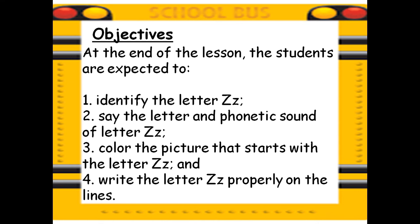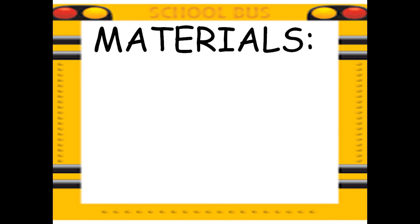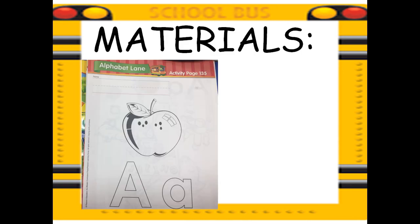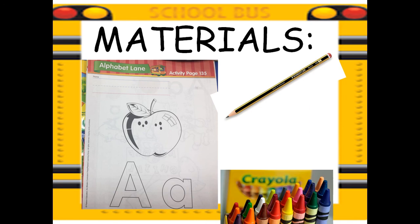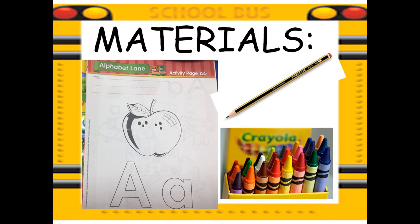At the end of this lesson, the students are expected to first identify the letter Z, say the letter and the phonetic sound of the letter Z, color the picture that starts with the letter Z, and write the letter Z properly on the line. You will be needing your phonics book, your pencil, as well as your crayons. Please bring them out, KGs.